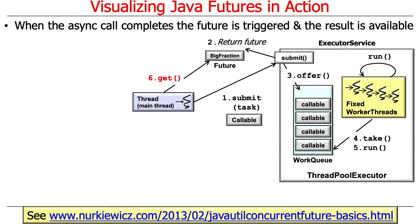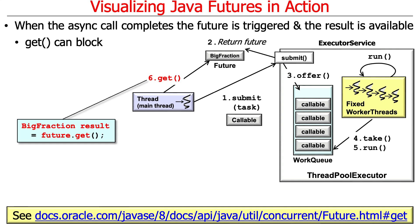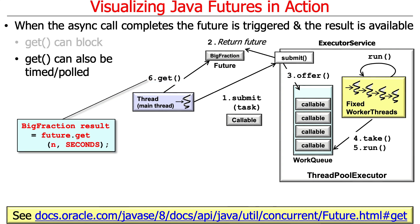When the asynchronous call completes, the future will be triggered — in other words, the result will be given to it. That means anybody who wants to obtain that result can get it without further blocking. At some point the client calls get() on that future, and if it's finished it'll return a result; if it's not finished it'll block. There are ways of bounding the amount of time needed to block — you can use a timed result specifying seconds, milliseconds, or microseconds.